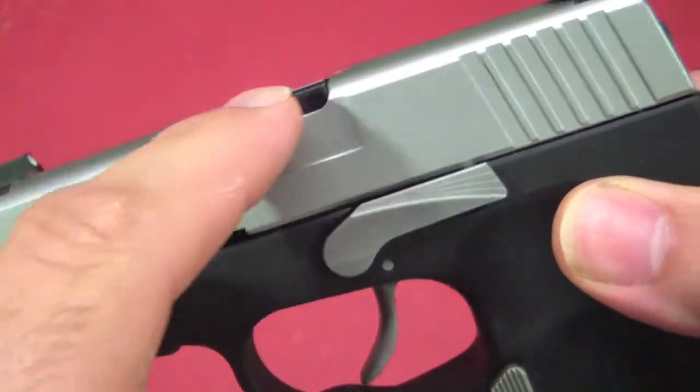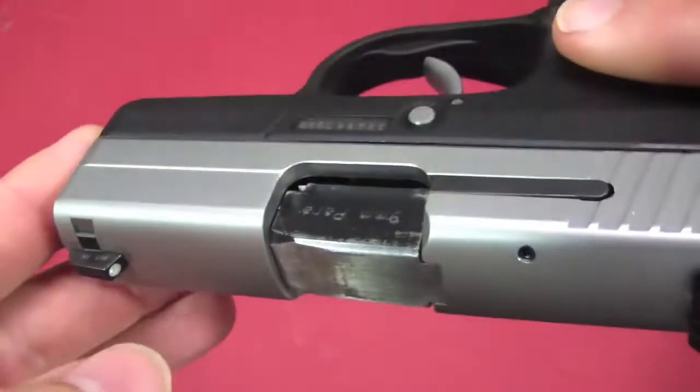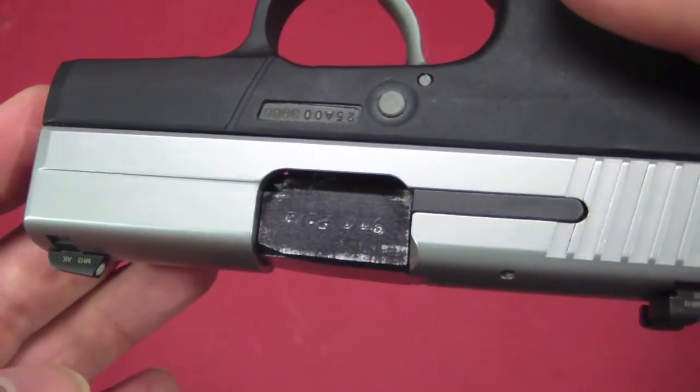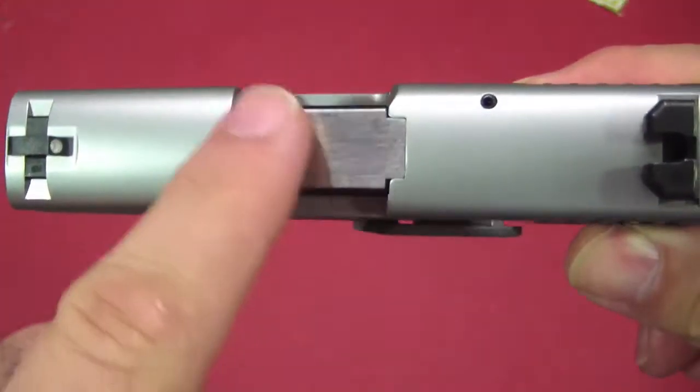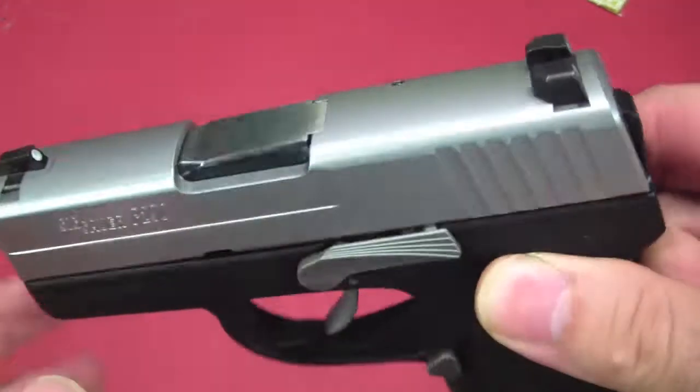And I never really cared for the black slides on the barrels anyway because they do get scraped up really badly. So I'm going to strip that down, polish it up, put a little bit of bling on the gun in this area right here. Nothing ever hurts to have a little shiny spot on a gun. I like to have a little bling on them.